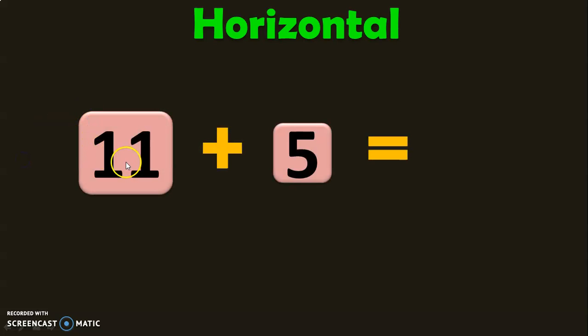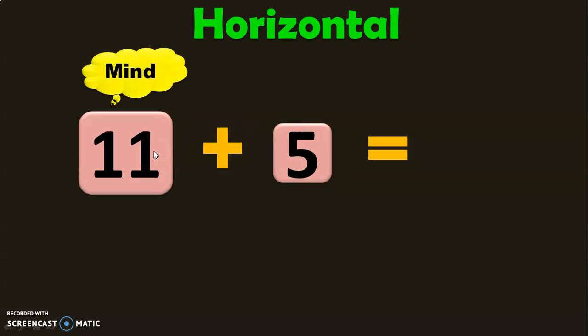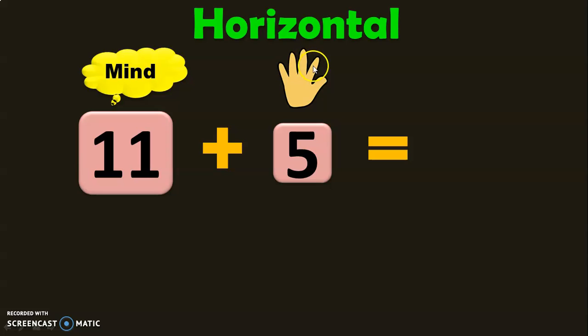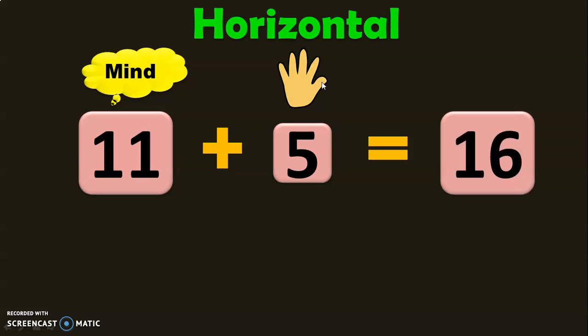Next, we have the number 11 plus 5. Now you will have 11 in your mind and 5 in your fingers. After 11, it will be 12, 13, 14, 15, and 16. So the answer is 16. 11 plus 5 is equal to 16.